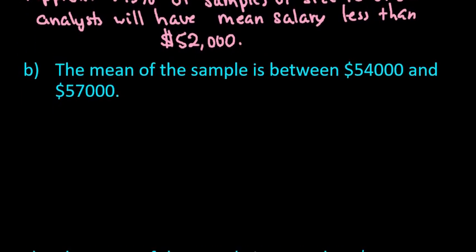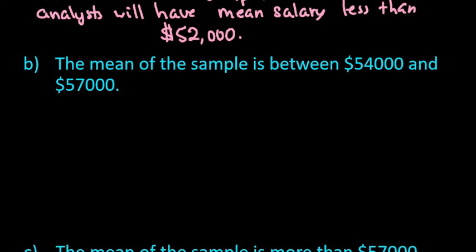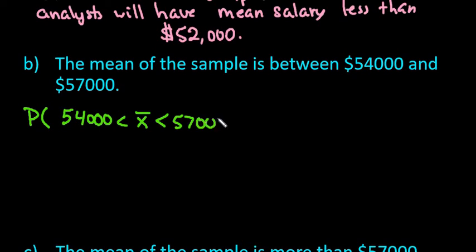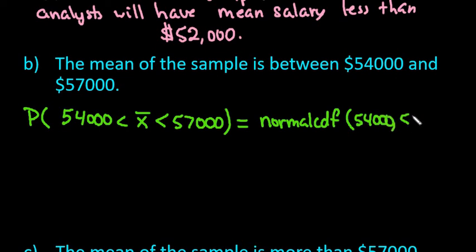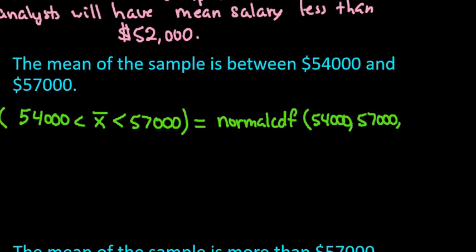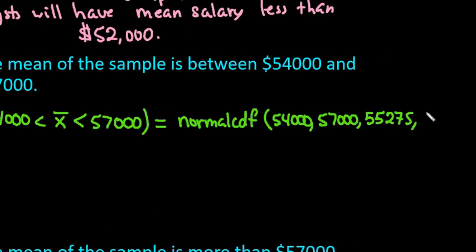Moving on to the next one — I'm going to try to get through these last two more quickly, but I did want to show you how to find the probabilities. For this one, we're looking for the probability that our sample mean is between $54,000 and $57,000. We're going to use normal CDF again. This time, our lower is going to be $54,000, our upper is going to be $57,000. The mean is still $55,275 and our standard deviation is still 7,000 divided by the square root of 40.